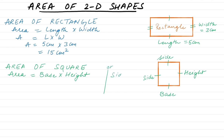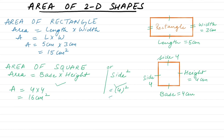Both ways are correct — either base times height or side squared. Let's assume the side of the square is 4 cm. We know that all the sides of the square are equal, so every single side is 4. Therefore, the area of the square equals 4 times 4 if we're doing base times height, or 4 squared if we're doing side squared, which equals 16 cm². Both ways are absolutely correct.